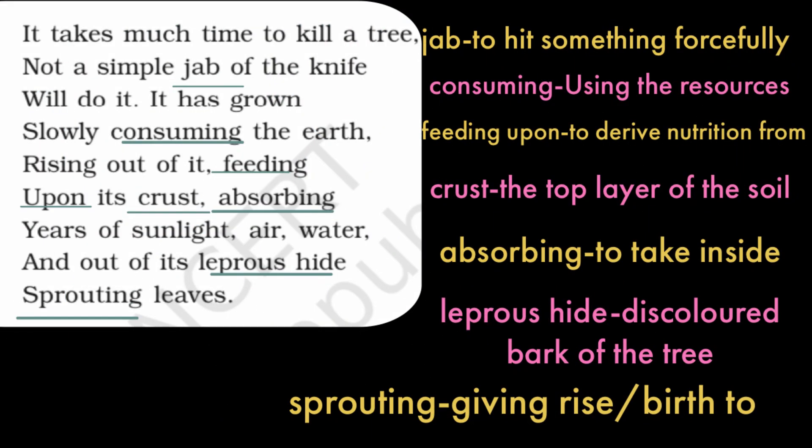Glossary: 'jab' means to hit something forcefully; 'consuming' means using resources; 'feeding upon' means to derive nutrition from; 'crust' means the top layer of soil; 'absorbing' means to take inside; 'leprous hide' means the discolored bark of the tree; 'sprouting' means giving rise or birth to.